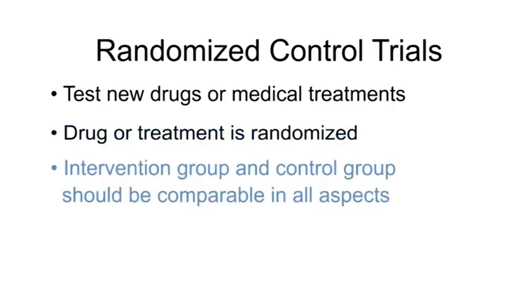The intervention group and the control group should be comparable in all aspects except the intervention itself. For example, the proportion female and the age distribution would be very similar in both the intervention and the control groups.